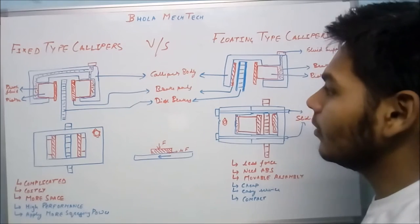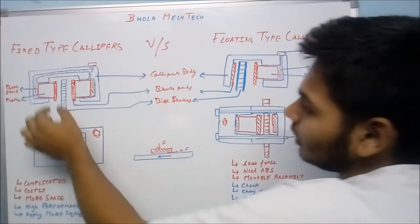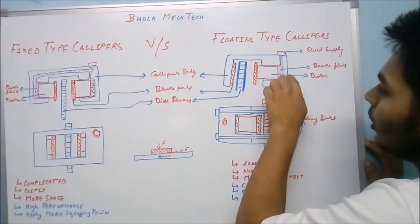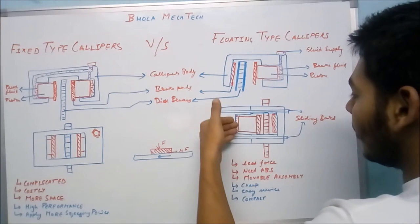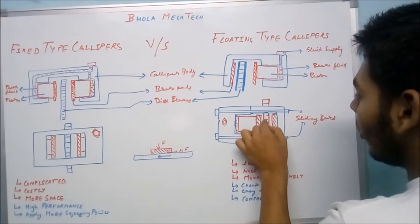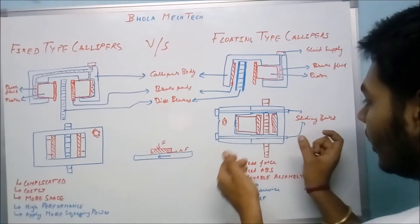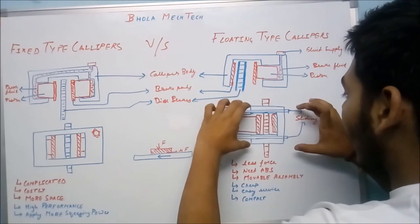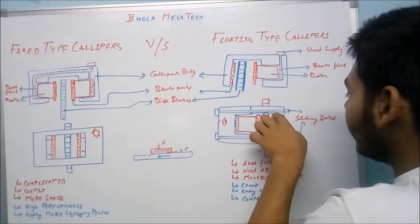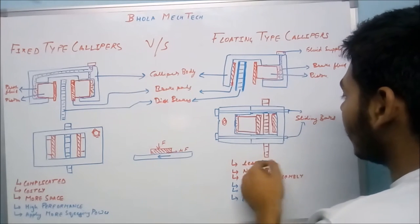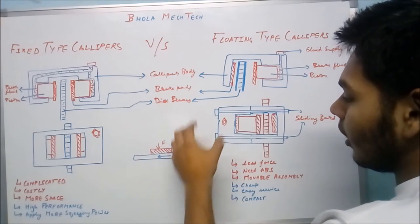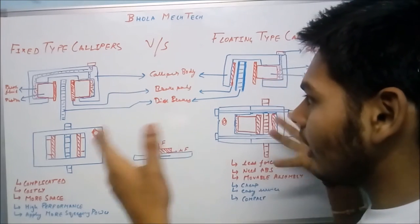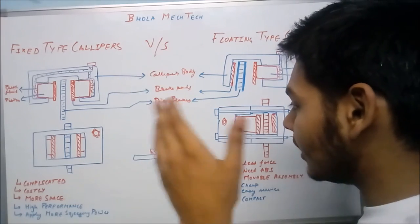Coming to the floating type caliper: the basic difference is that in the fixed type caliper both pistons move towards the disc, but in the floating type only one piston moves. When pressurized fluid comes in, the piston actuates. When the piston comes in contact with the disc and cannot actuate further, it applies an opposite reaction force on the caliper body, causing the caliper to slide on its bars in the opposite direction, bringing the other brake pad into contact with the disc. This causes the disc to retard and hence the vehicle retards.